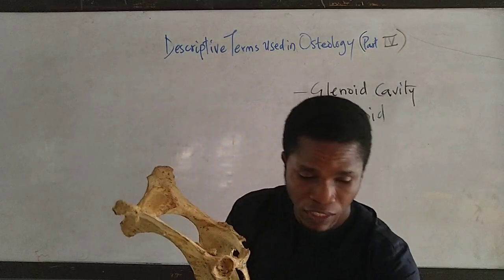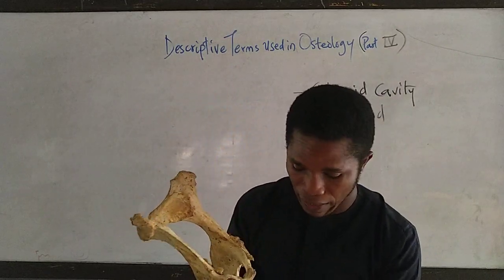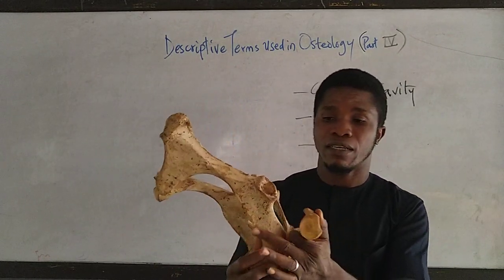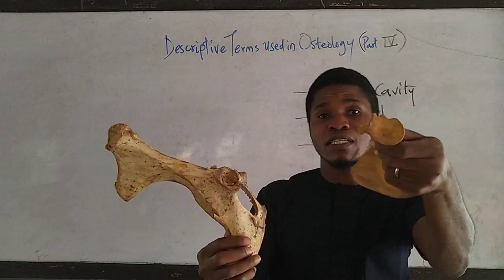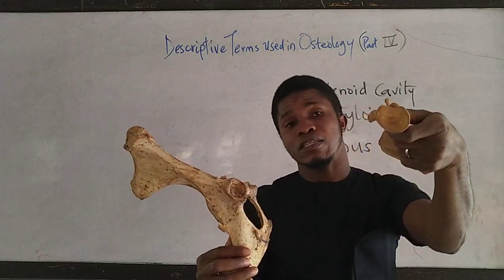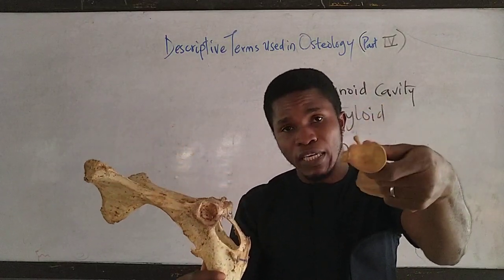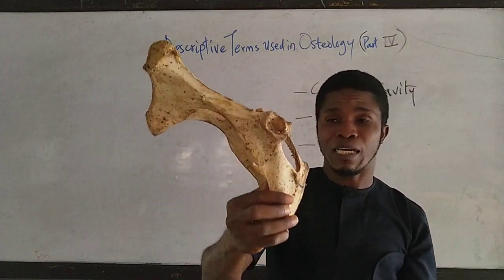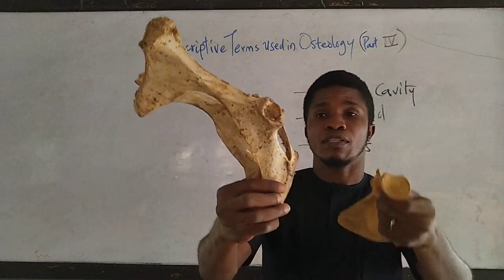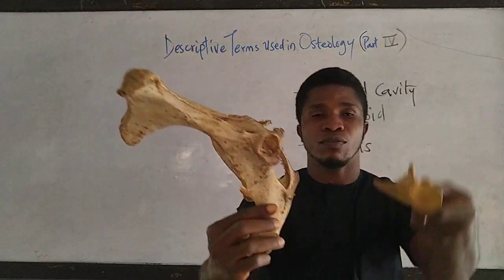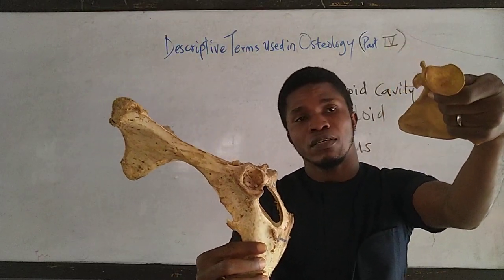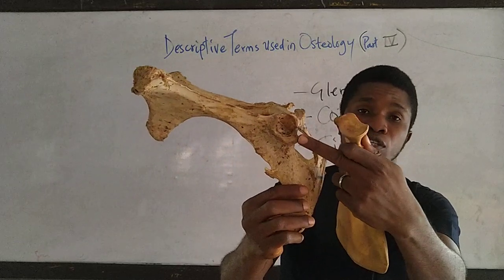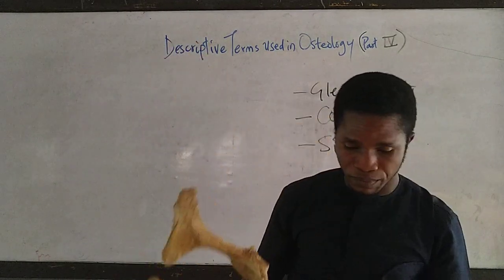As you can see, the cotyloid is actually deeper than the glenoid cavity. So this is a glenoid cavity on the pectoral girdle, and then we have the cotyloid or the acetabulum on the pelvic girdle. This one is a glenoid cavity, while this is a cotyloid or acetabulum.